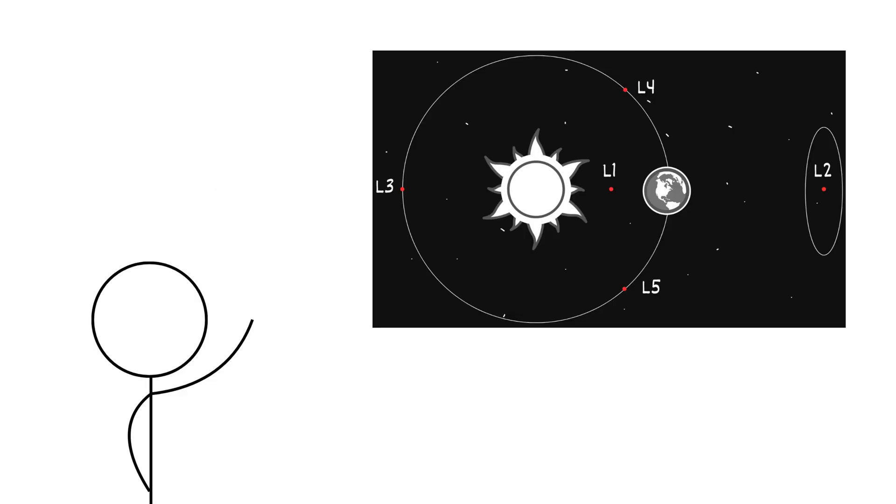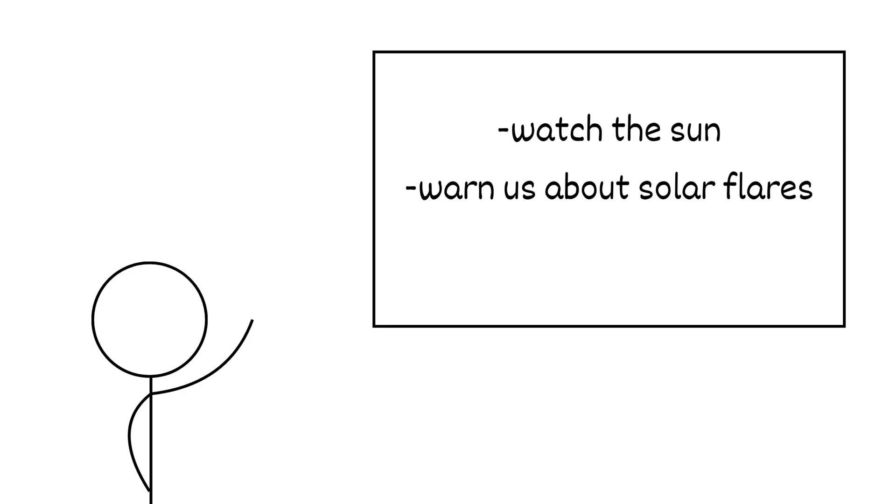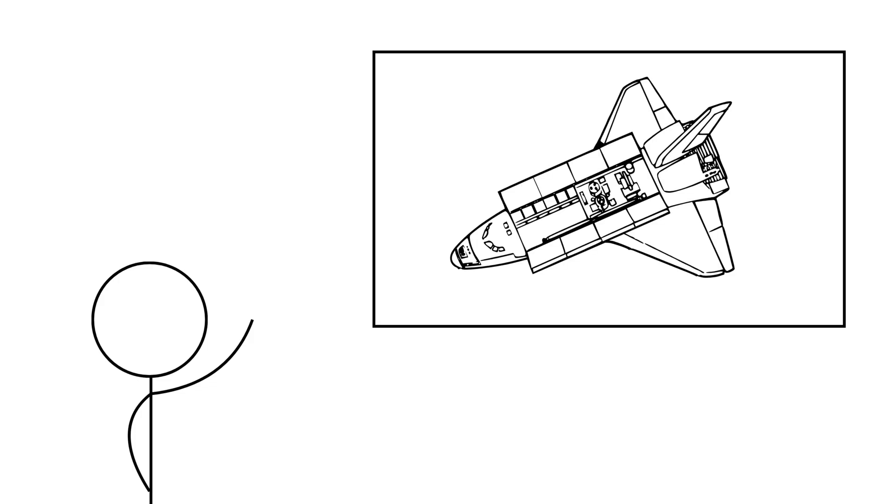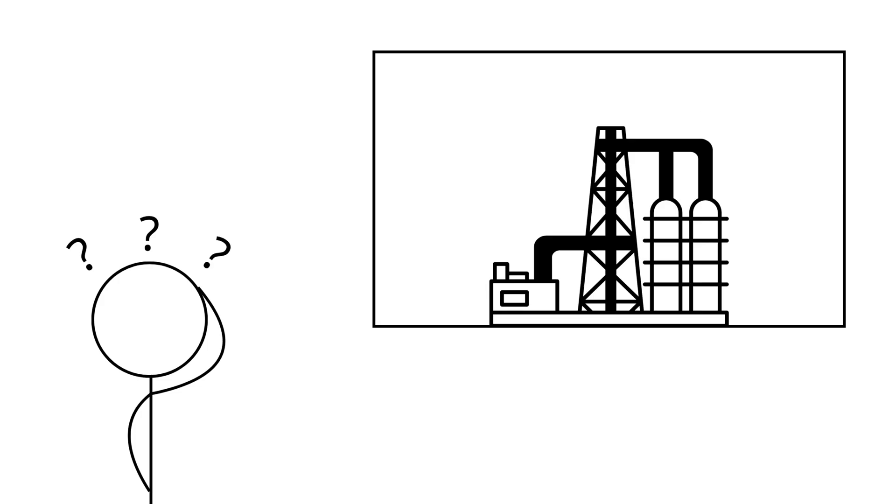This isn't some far-off idea. We already use these points every day. They watch the sun, warn us about solar flares, and help us look deep into the universe. And in the future, these little calm spots could be home to space stations, fuel stops, maybe even factories.